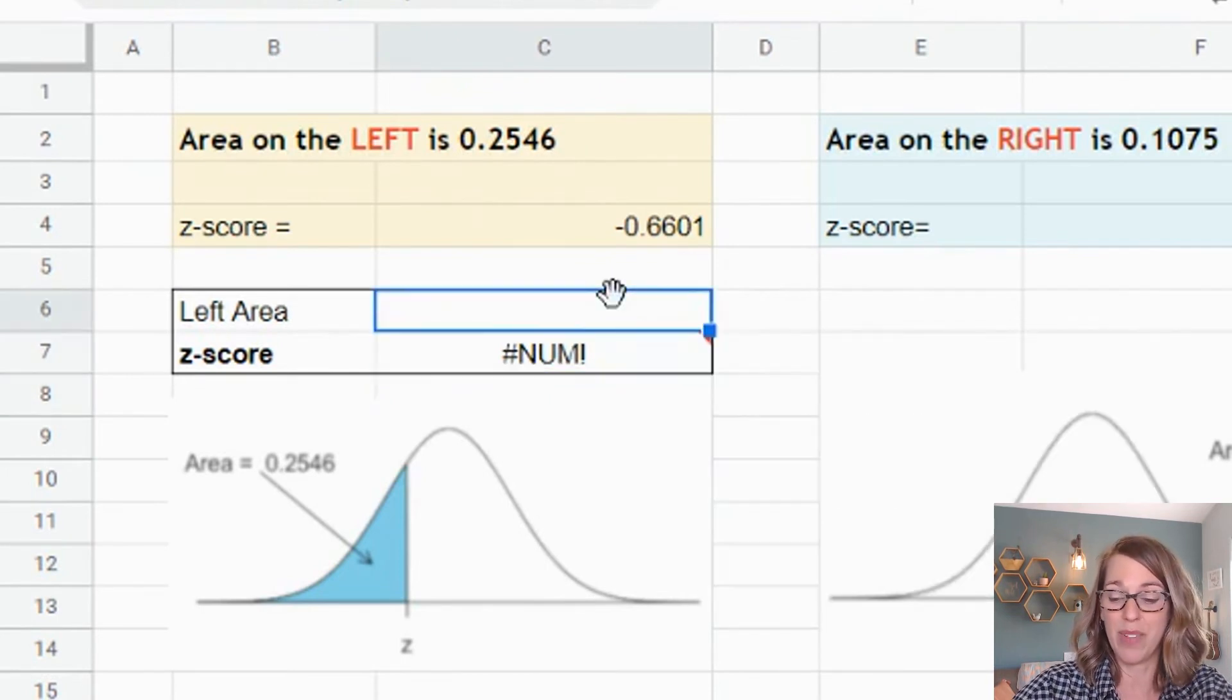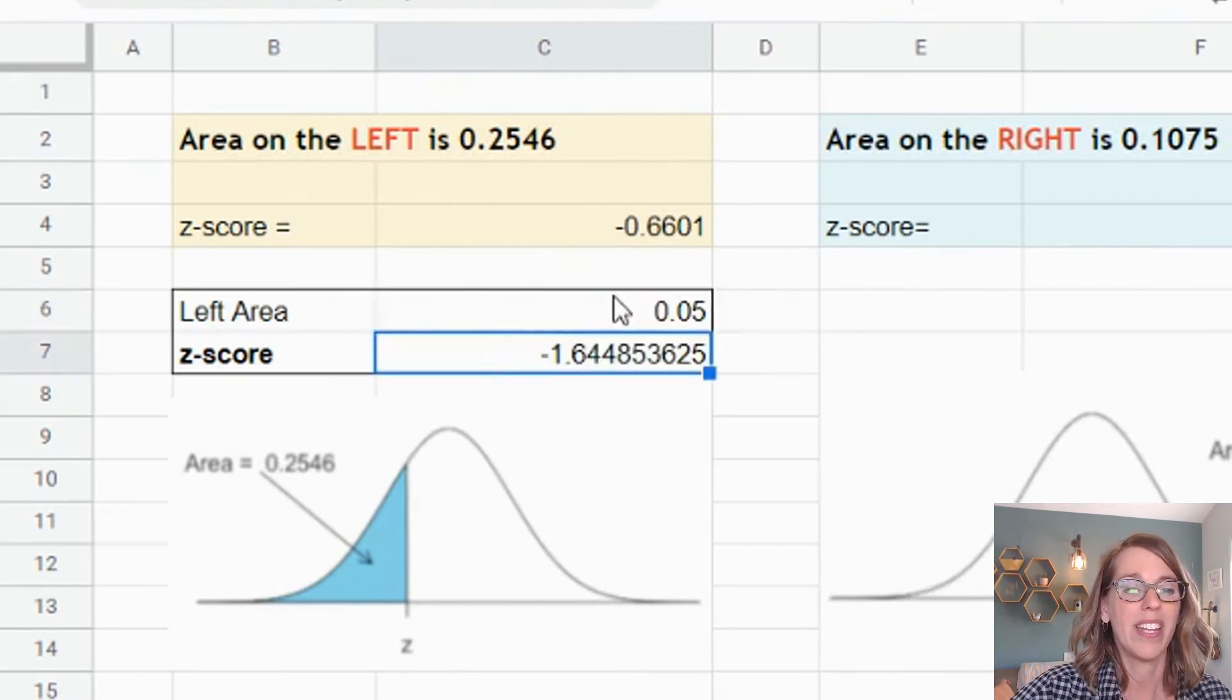Right now it doesn't like it - it says you didn't give me anything. So let's do an area to the left of 0.05. Now if I hit it, I end up with that negative 1.64646.